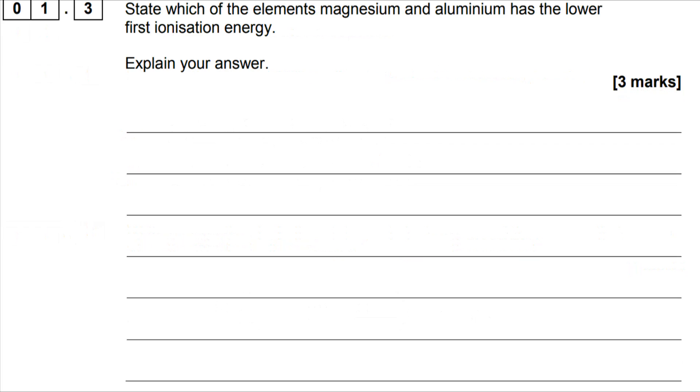Moving on to the ionization energy trend, we want to know which out of magnesium and aluminum has the lower first ionization energy. Three marks here. Now you won't get the mark for writing out these electron configurations, but I would always recommend that you do because this allows you to see what the significant difference is between the two of them.